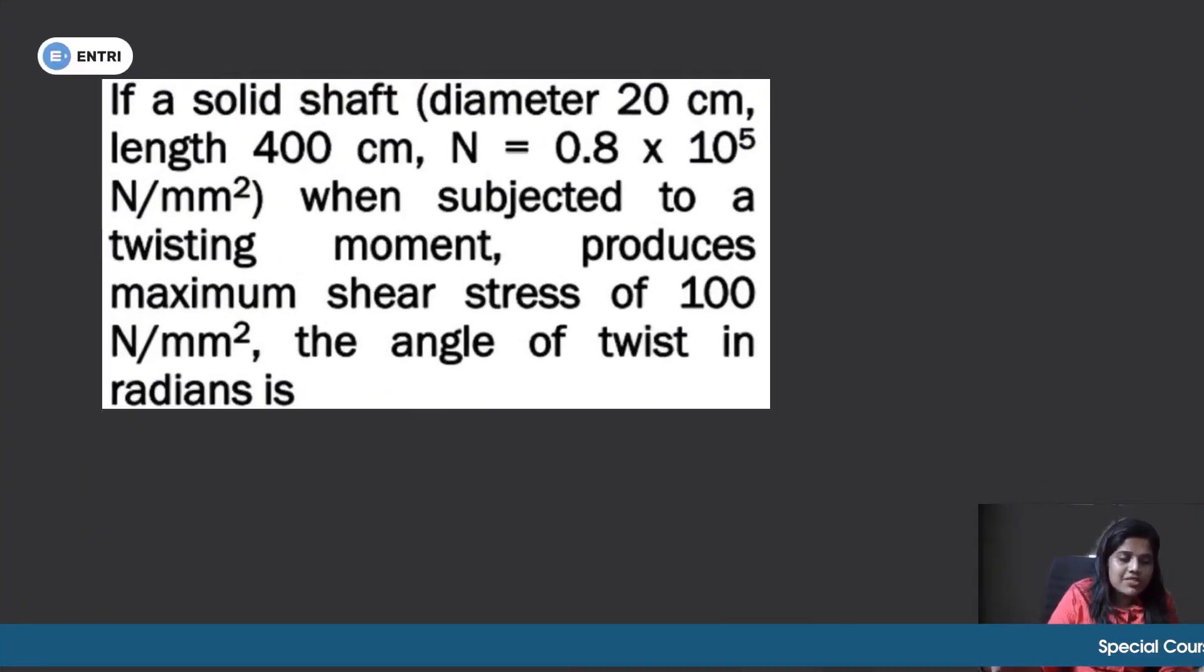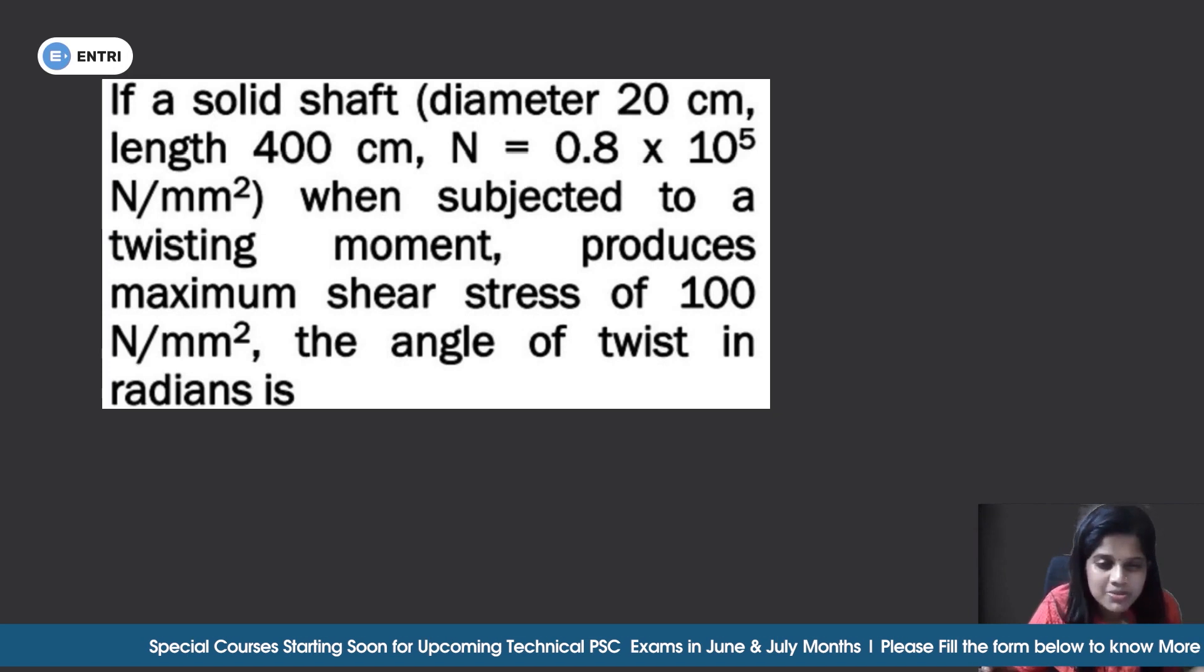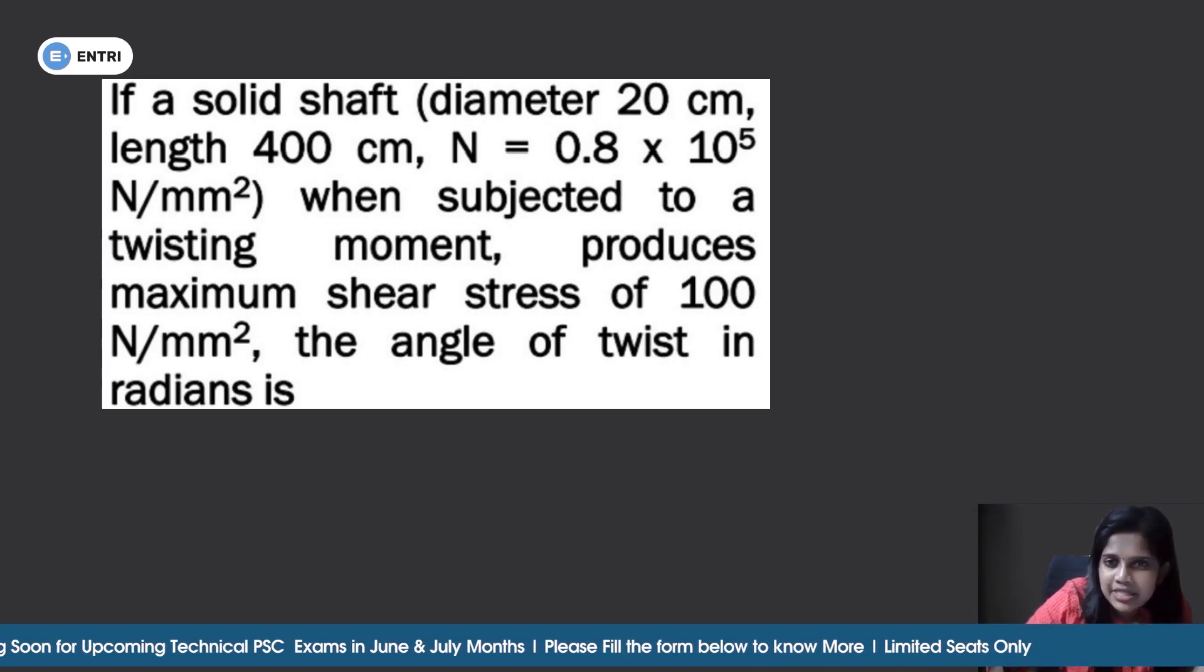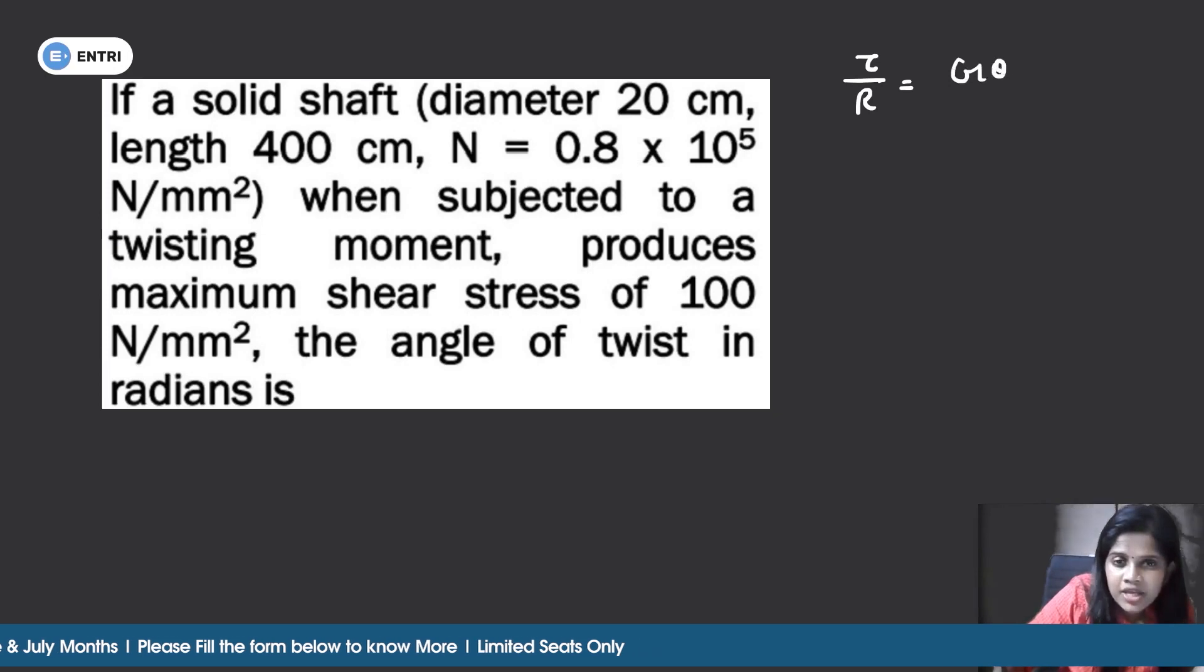Next question: if a solid shaft diameter 20 cm, length 400 cm, N is equal to 0.8 into 10 raised to 5 N per mm square, when subjected to a twisting moment produces maximum shear stress of 100 N per mm square, then the angle of twist in radians. Let's take the formula: